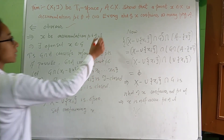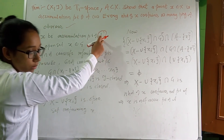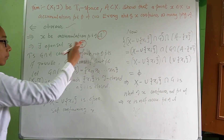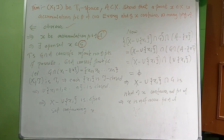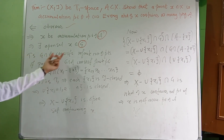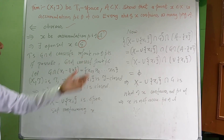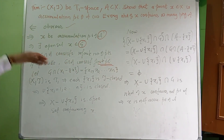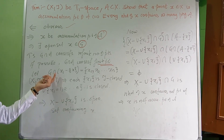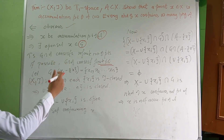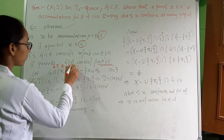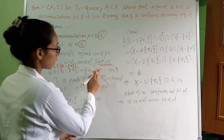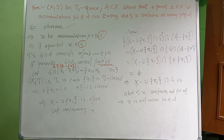We prove this by contradiction. Assume G ∩ (A minus {x}) consists of only finitely many points: X1, X2, ..., Xn. Since X, T is T1, each singleton {Xi} is closed. A finite union of closed sets is closed, so the union of {X1, ..., Xn} is closed. Therefore its complement, X minus this union, is open and contains X.